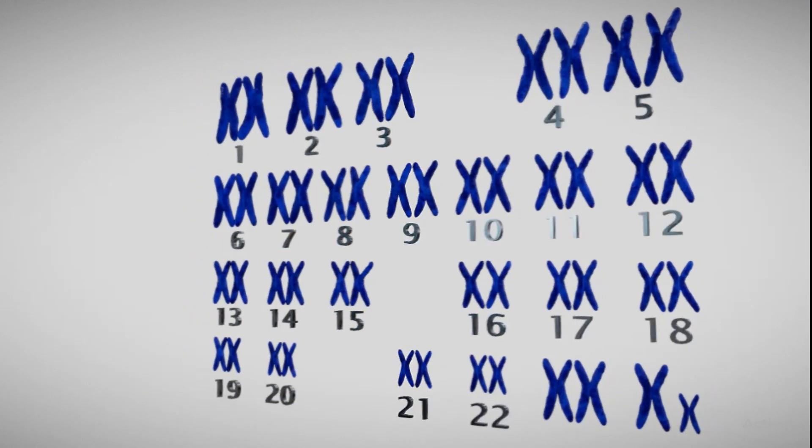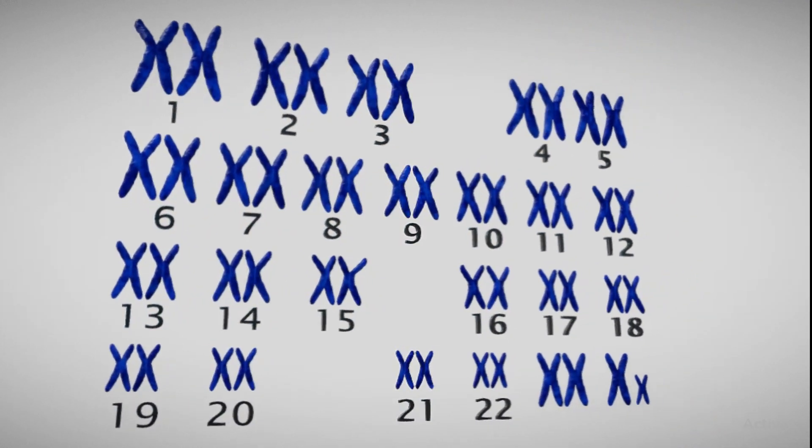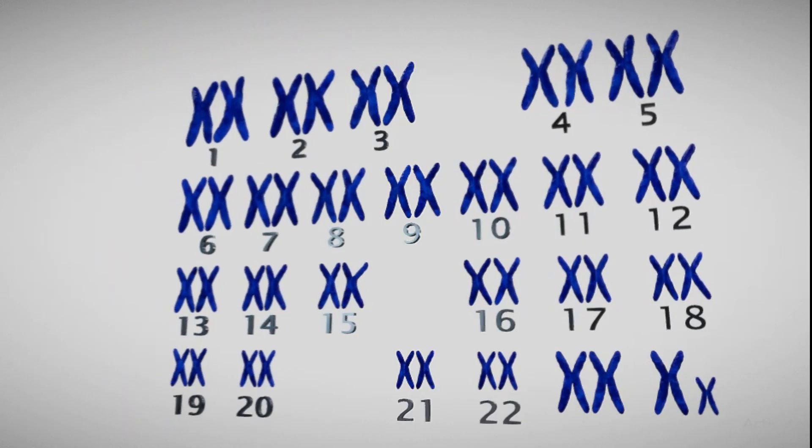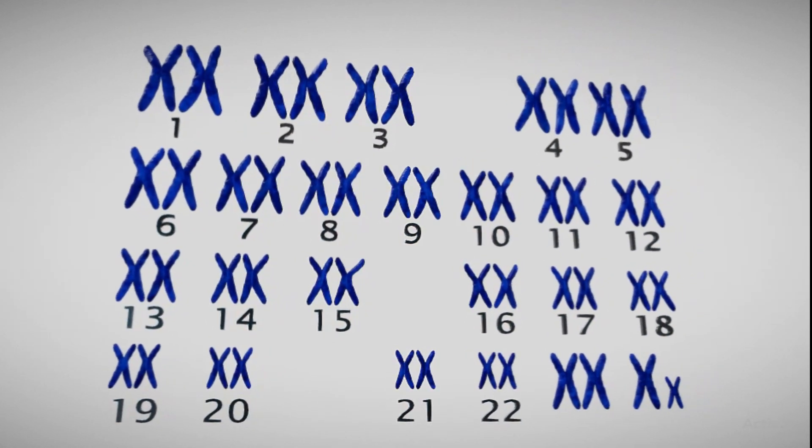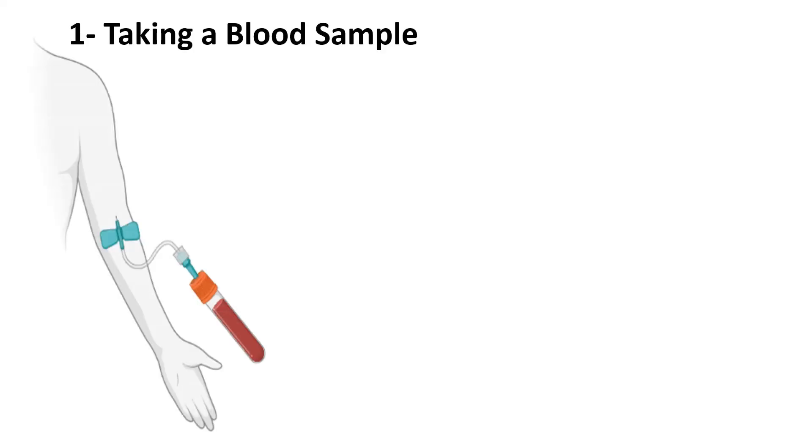A karyotype is an individual's set of chromosomes. The term also refers to a laboratory-produced image of a person's chromosomes arranged according to well-defined criteria. The first step in performing a karyotype is to collect a sample.